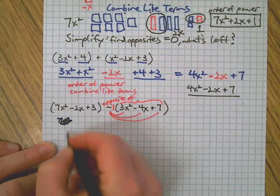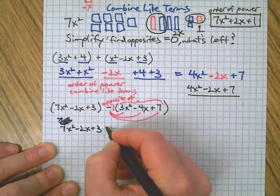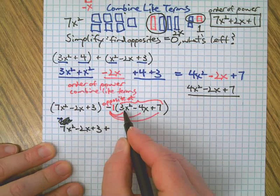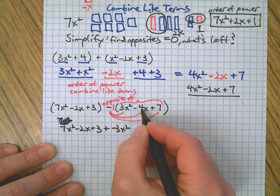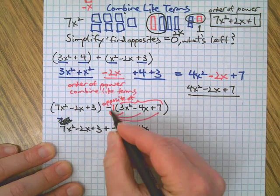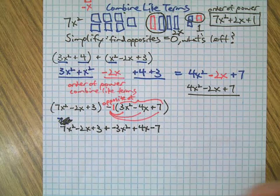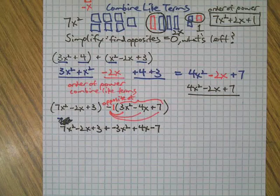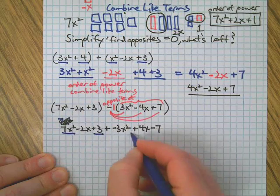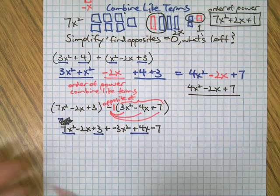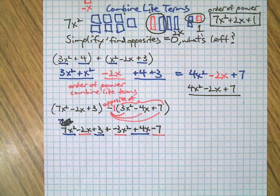Okay? So, we're still going to have this over here. And then, and, I want the opposite of 3x squared. Which is negative 3x squared. I want the opposite of negative 4x, which is positive 4x. And, I want the opposite of positive 7, which is negative 7. Okay? So, now I'm going to underline all my positives in blue. I'm going to underline all my negatives in red. Now, I'm going to combine like terms.